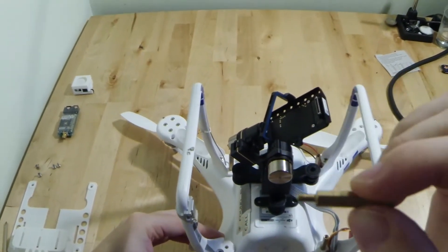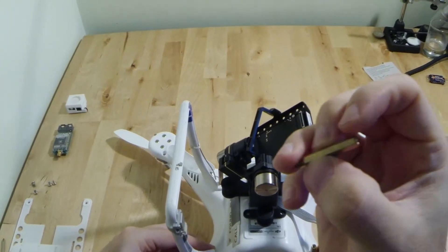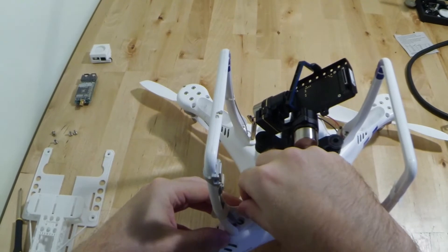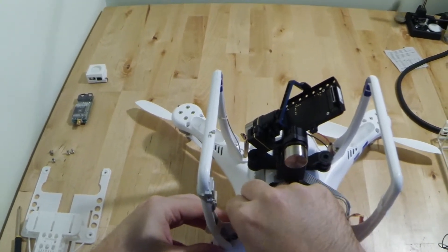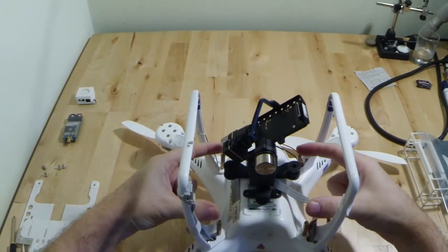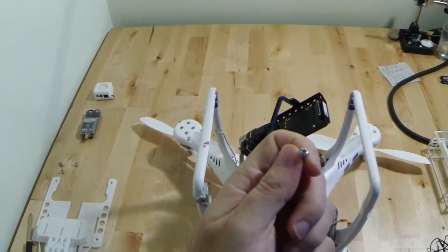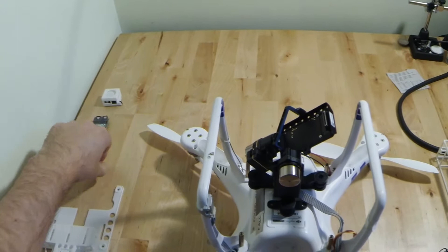I'll take one out so you can see it. There you go. Two threads, M3 threads. They just replace the screws, screw in and then basically the tray is going to sit on top of here and we're going to use the existing M3 screws that came with the Phantom to go into there.